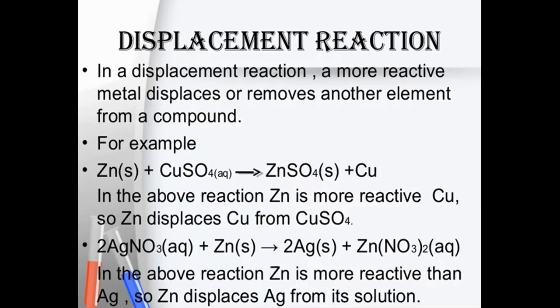For example, zinc when added to copper sulfate solution changes the color of the solution from blue to colorless, resulting in the formation of zinc sulfate solution. In this reaction, zinc is more reactive than copper, so zinc displaces copper from copper sulfate solution.